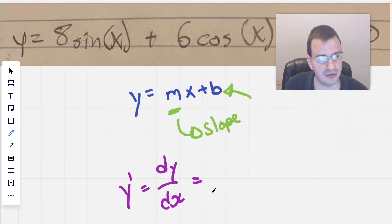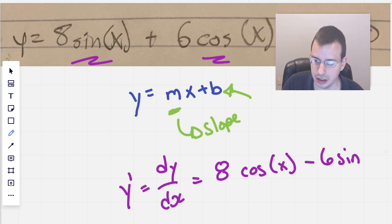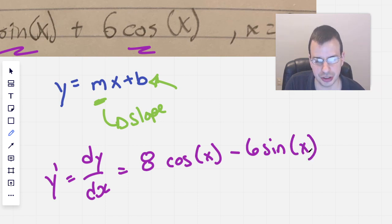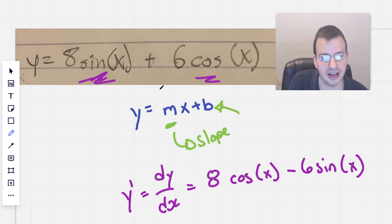And so we're going to take the derivative of the first part, and then that's going to be the derivative of the second part. So this part, then that part. So we'll have 8 cosine of x minus 6 sine of x. And we don't have to worry about the product rule or chain rule or anything like that, because we know the derivative of sine of x. We know the derivative of cosine of x, something you should have memorized.